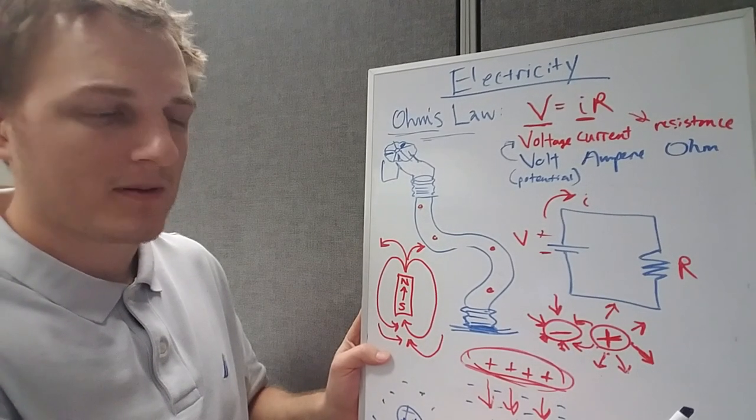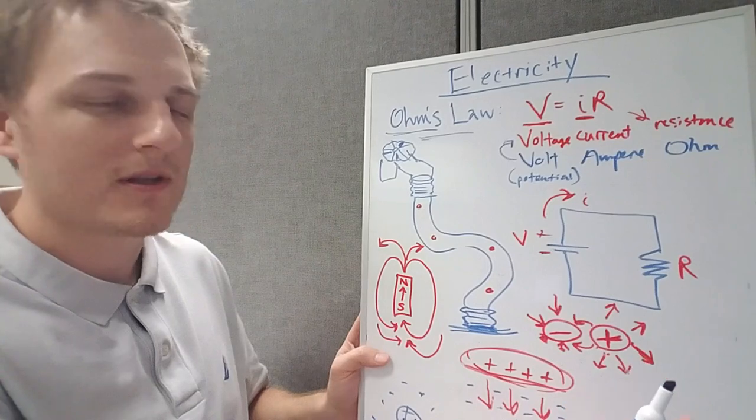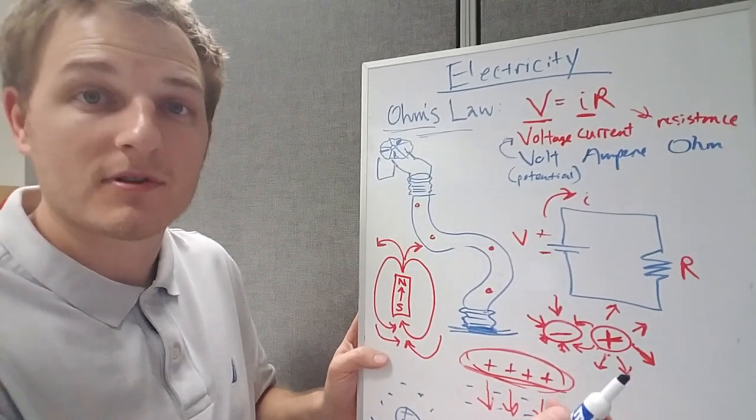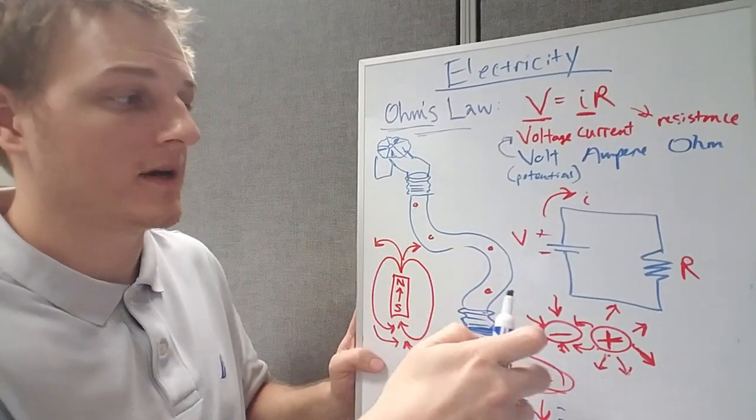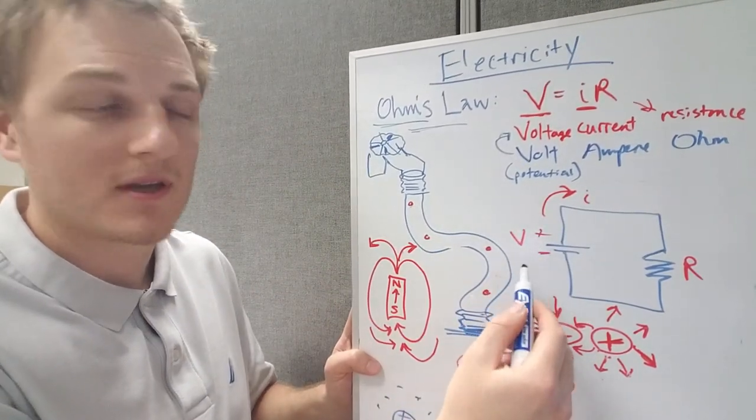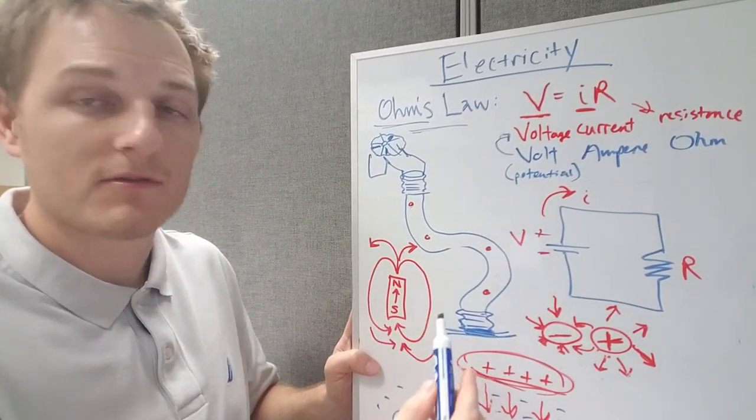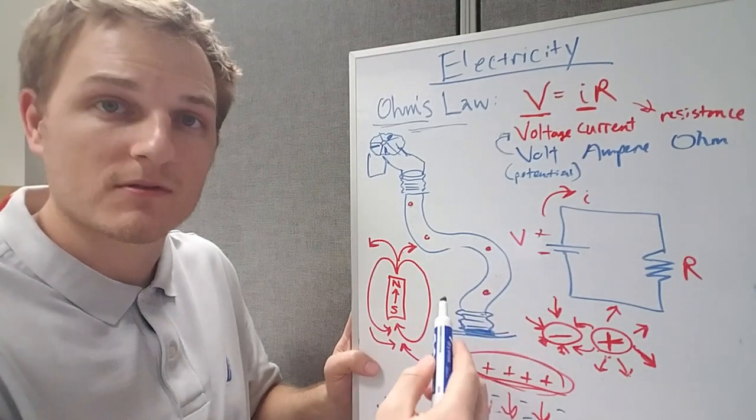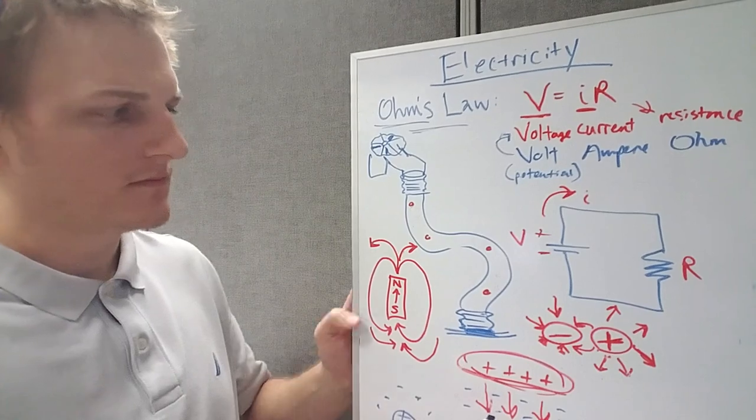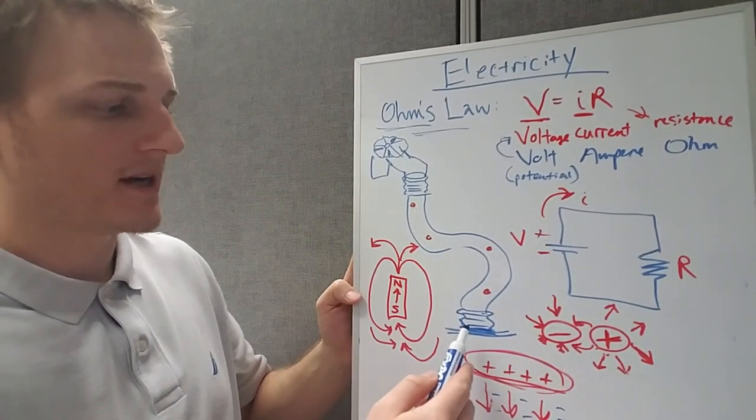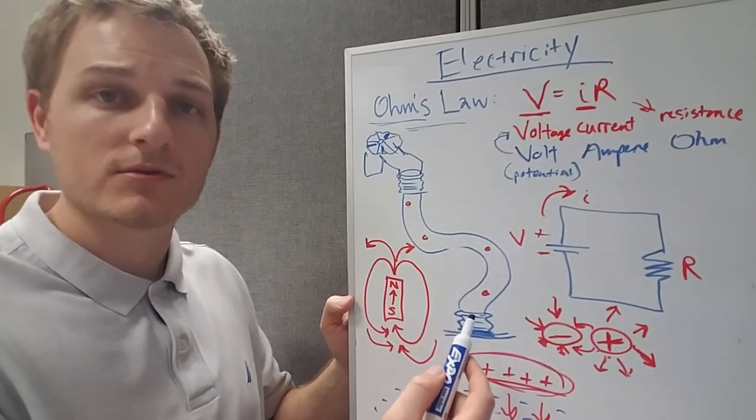So essentially a recap from last time: all electricity is is the flow of electrons in a field created by a potential difference between groups of positive and groups of more negatively charged atoms.